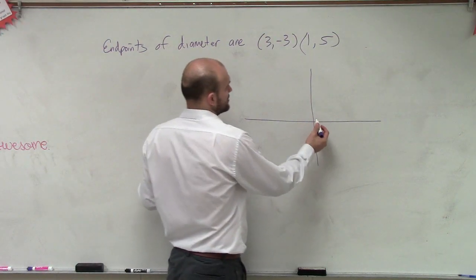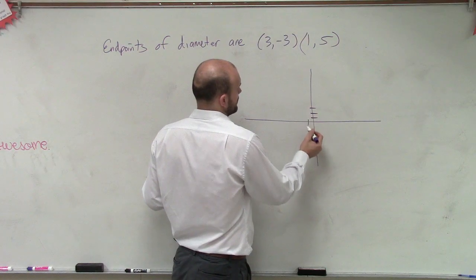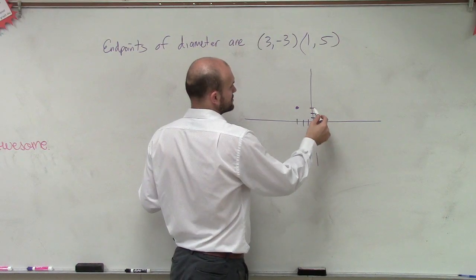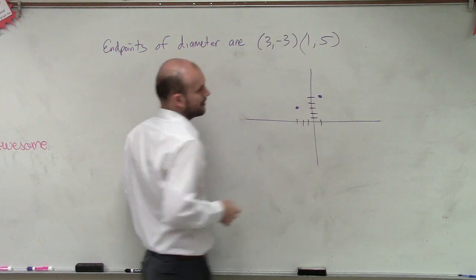So let's plot our points. So we have 1, 2, 3, 1, 2, 3, negative 3, 1, 2, 3. Then we have 1 comma 5, over 1, up 5, 1, 2, 3, 4, 5.